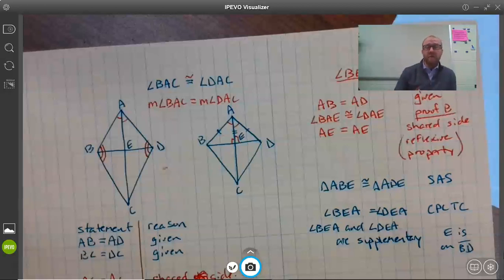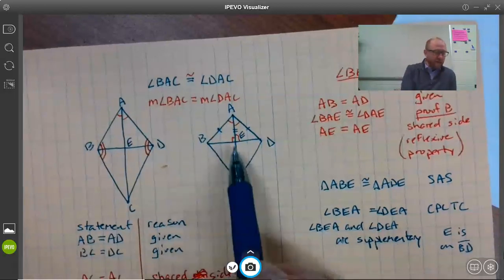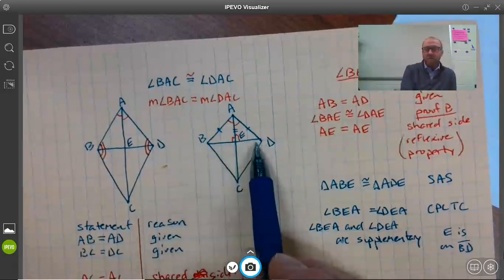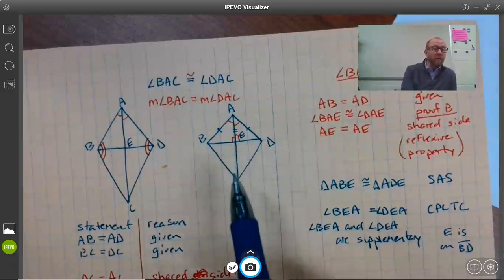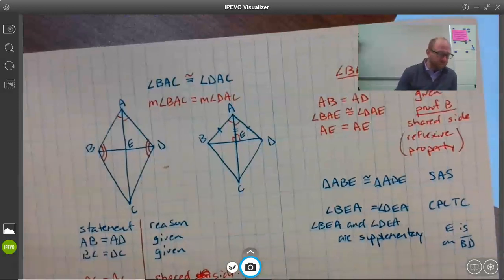So some people would bring in an extra reason and say BEA and DEA are on a straight line, therefore they are a linear pair, and because they're a linear pair, they're supplementary. Extra step there. We're kind of at a bare-bones proof here.